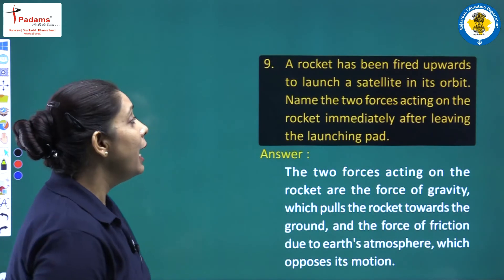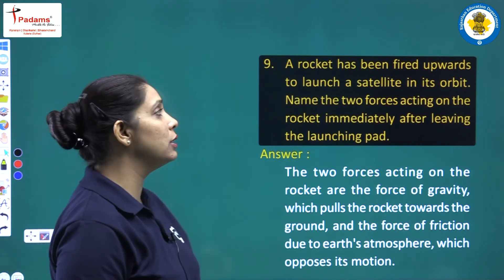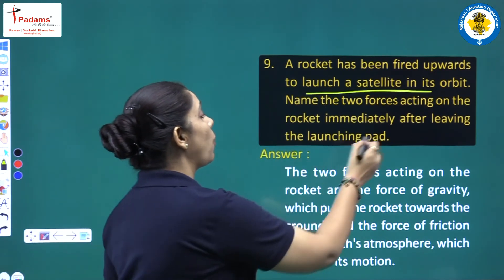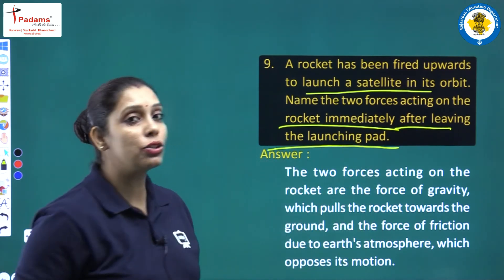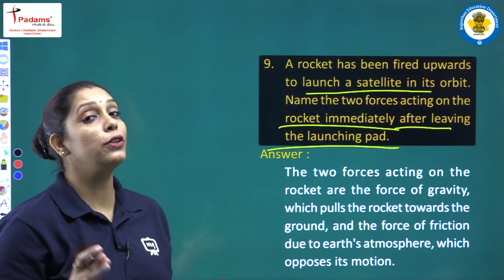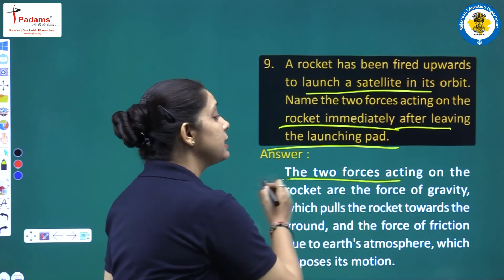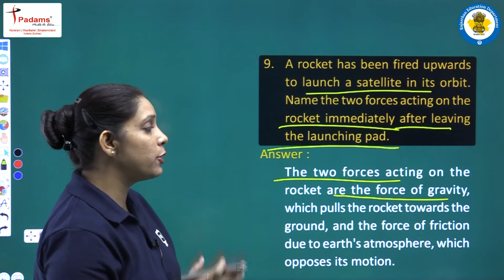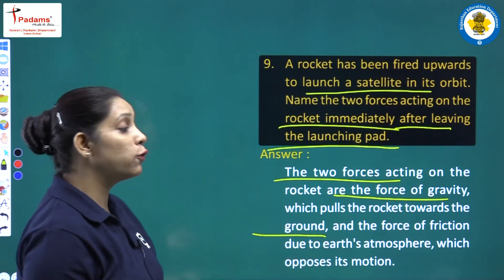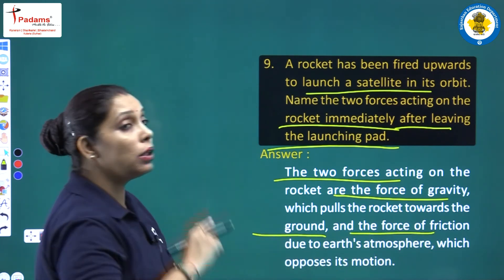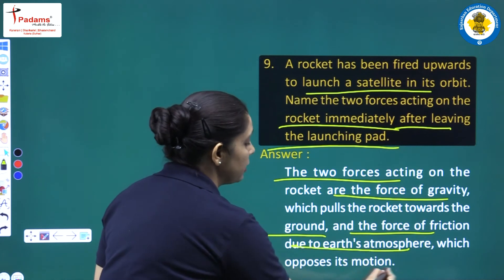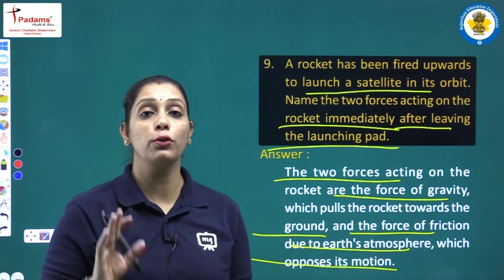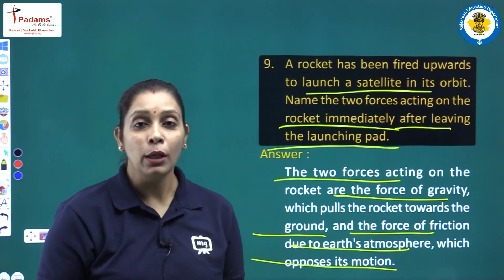Question 9: A rocket has been fired upwards to launch a satellite in its orbit. Name the two forces acting on the rocket immediately after leaving the launching pad. The two forces acting on the rocket are: first, the force of gravity, which pulls the rocket towards the ground; and second, the force of friction due to Earth's atmosphere, which opposes its motion.